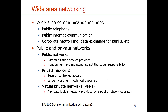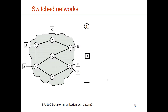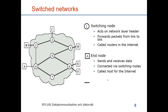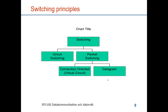Here is the general structure of a switched network. The circles represent switching nodes that act on a network layer header and forward packets from link to link — we call these routers in the internet. The boxes are end nodes (called hosts in the internet) that send and receive data. The lines are data links operating on the physical and data link layer. The main switching principles are circuit switching and packet switching, with packet switching subdivided into virtual circuit switching and datagram.